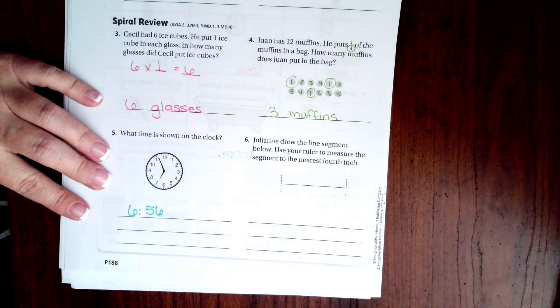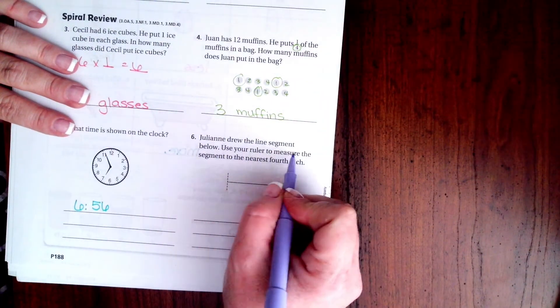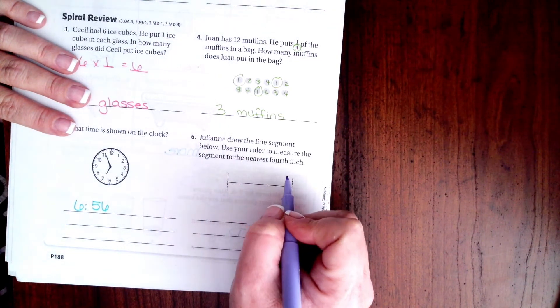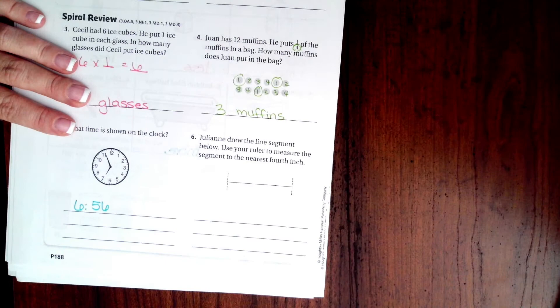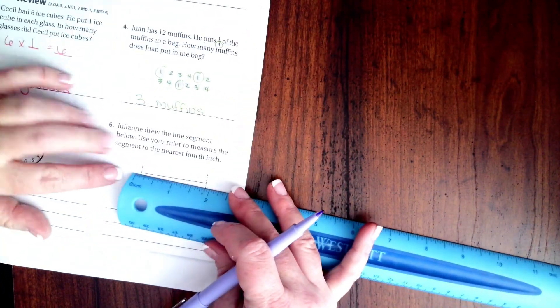So we're going to go ahead and do number six. It says Julian drew the line segment below. Use your ruler to measure the segment to the nearest fourth of an inch. So we're going to start. Notice that my ruler starts before my lines do.